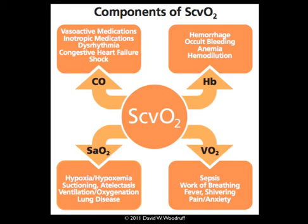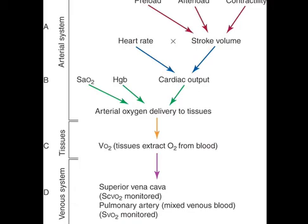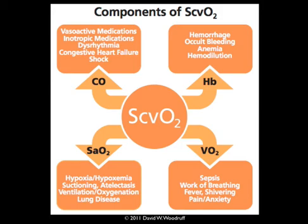Oxygen saturation, the SAO2, is also on the same line in the arterial system — it affects how much arterial oxygen gets to the tissues and in turn how much oxygen is available for them to utilize. Hypoxia, suctioning, atelectasis, ventilation method, oxygenation, and lung disease all affect the patient's SAO2. Lastly, VO2 — oxygen consumption. If oxygen consumption changes, that changes SVO2 as well. Sepsis, work of breathing, and fever are all things increasing oxygen consumption, as are anxiety and pain.